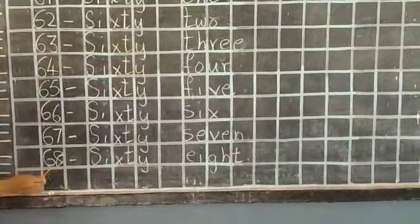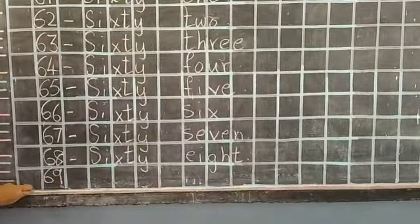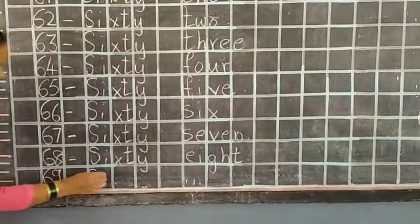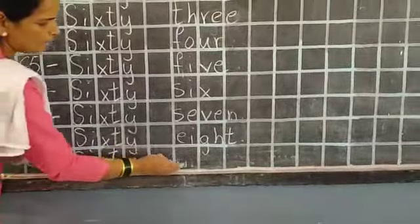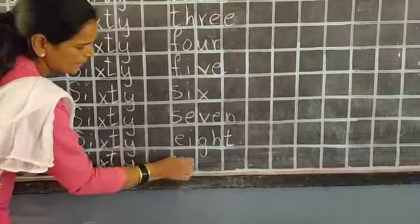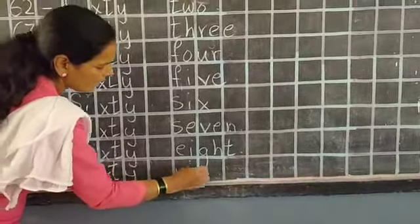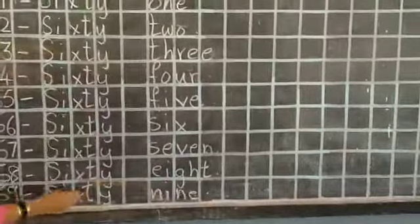69. Next, 69. Small dash. S-I-X-T-Y, sixty. Leave a box. N-I-N-E, nine. 69.